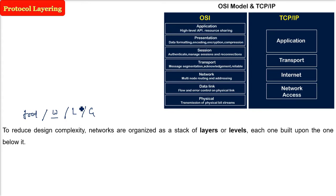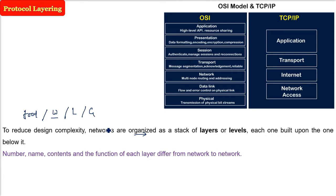There are different reference layer models, the most prominent being the ISO OSI layer and TCP/IP layers. Please remember these are only reference models. One important thing: the number, name, contents, and function of each layer differ from network to network - this is a very important aspect.